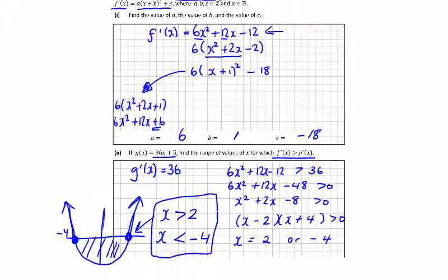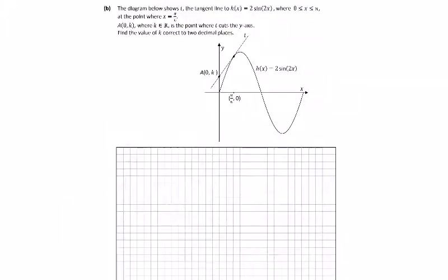Second part of this question. The diagram shows below, the tangent to the line h(x), this guy here. And we have a point 0, k here on the y axis, we have a point here, x is equal to pi over 6.